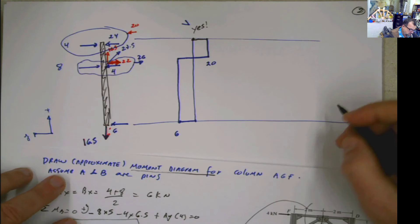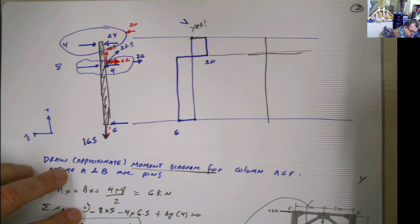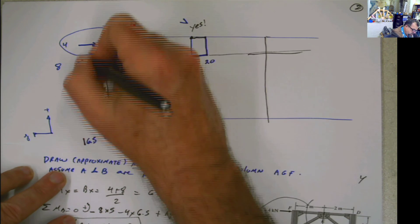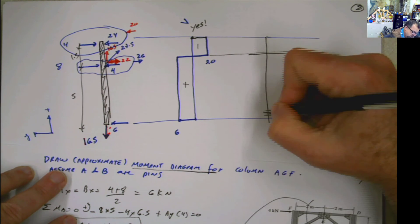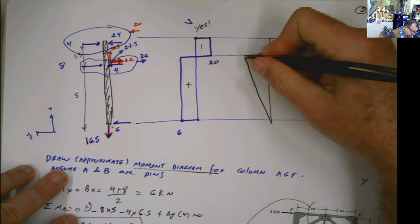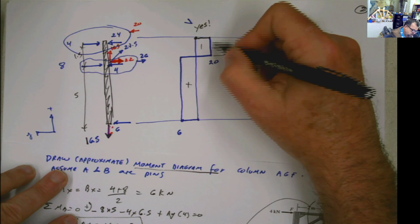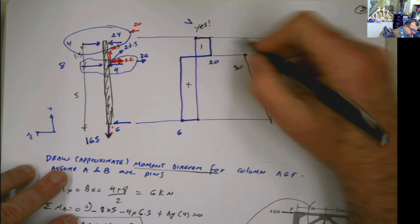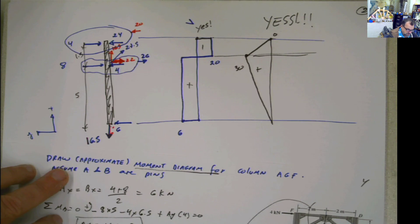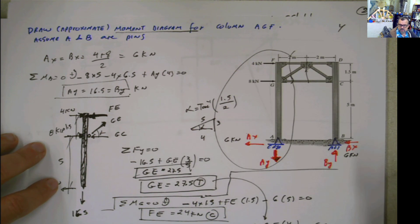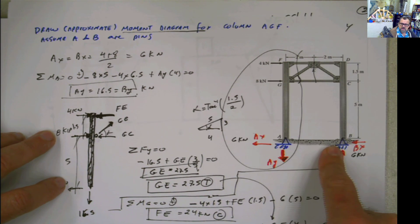For the moment diagram: there are no concentrated moments since all connections are pins. The segment from base to G has length 5, with shear of 6, so the area is 6 times 5 equals 30 kilonewton-meters — the moment rises linearly to positive 30. Then from G to the top, length is 1.5, shear is negative 20, so area is 20 times 1.5 equals 30 — the moment returns linearly to zero. This confirms the diagram closes correctly. Easy and simple, but important because this combination of columns and trusses is what you see in real life. In the next video, I'll solve the same problem assuming both supports are fixed.